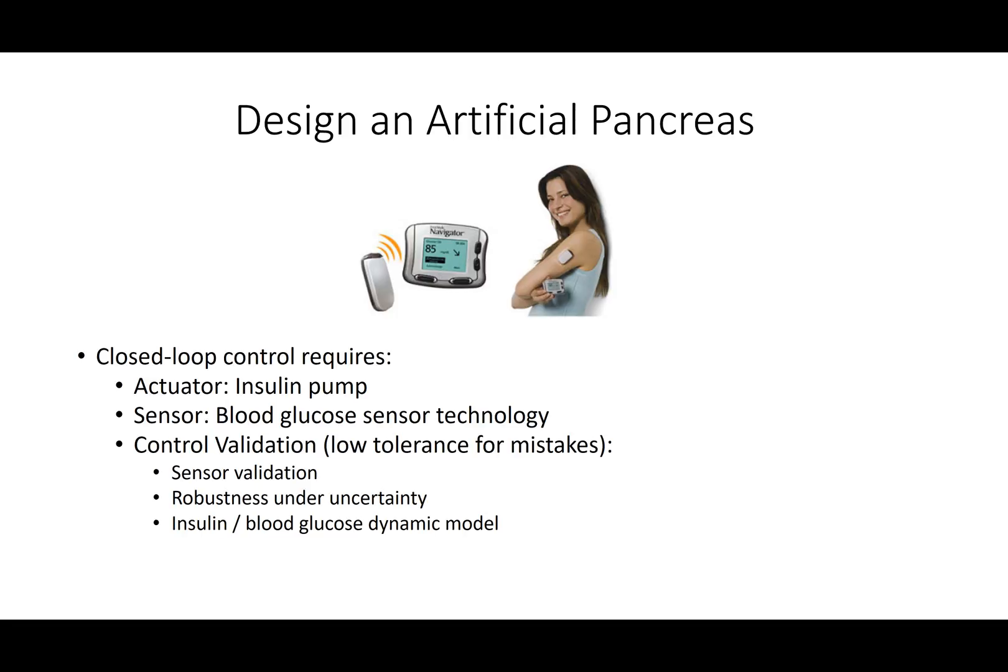I'm going to introduce this problem on how to design an artificial pancreas. We're going to do this for a process control exercise. The very first thing that you want to look at whenever you're designing a process controller is if we have the three essential elements for closed loop or automation.